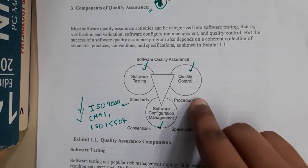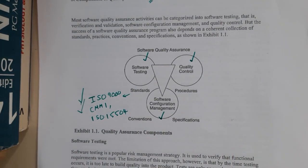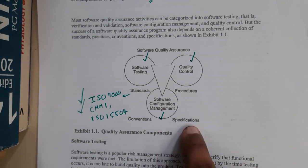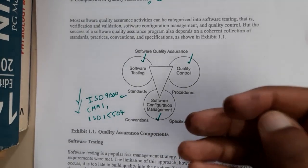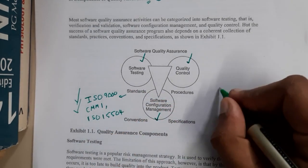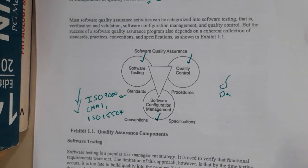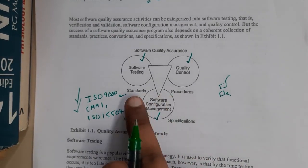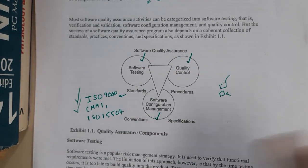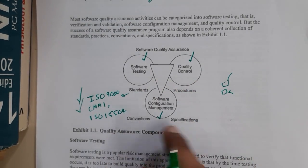The procedure is basically the steps you follow to perform things. Conventions are the conventional rules you follow when selling a product or software. Specification refers to the minimum requirements — for example, when you download a game it will say this much RAM is needed, this much space is needed. The reason I explained these four terms is because in the given answer they are not explained clearly.